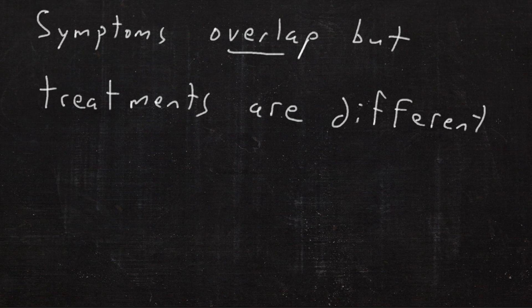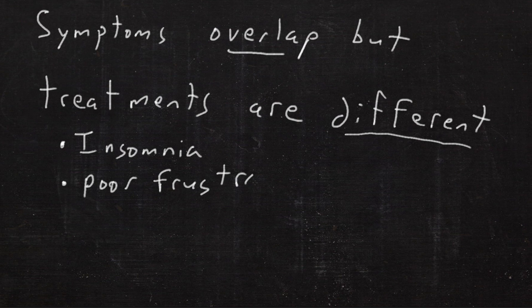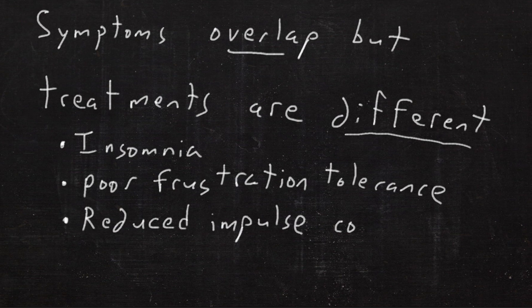The symptoms overlap, but treatments are different. For instance, insomnia, poor frustration tolerance, reduced impulse control, and low mood and energy can be found in both of these disorders.